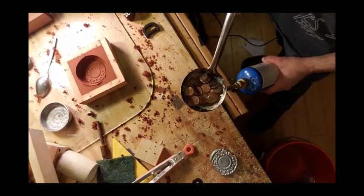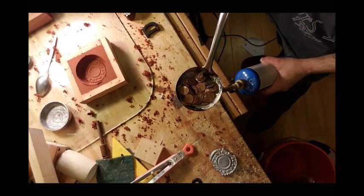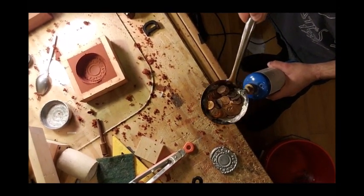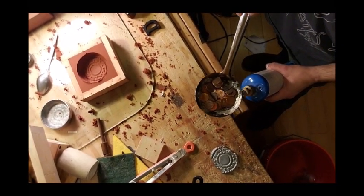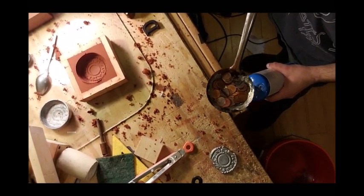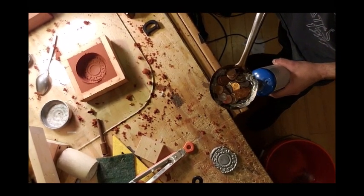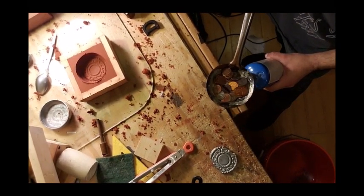And if you melt it, it turns into this beautiful silvery zinc liquid metal, which you're not going to see for a bit. Just keep your eye on the pennies, though. He's holding the torch underneath them. I believe zinc melts at 800 degrees Fahrenheit.